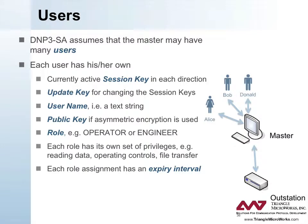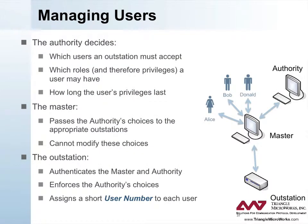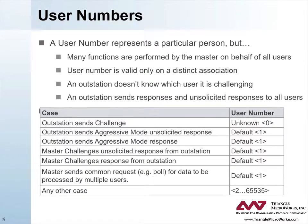DNP3 secure authentication assumes that the master may have many users. Each user has their own currently active session key in each direction. In addition, each user has an update key for changing the session keys, a username which is a text string, a public key if asymmetric encryption is used, and a role — for example, an operator or an engineer. Each role has its own set of privileges, such as reading data, operating controls, or executing file transfers. Each role assignment has an expiry interval as well. The authority decides which users an outstation must accept, which roles and privileges a user may have, and how long the user's privileges last. The master passes the authority's choices to the appropriate outstations and cannot modify these choices. The outstation authenticates the master and the authority, enforces the authority's choices, and assigns a short user number to each user. A user number represents a particular person; however, many functions are performed by the master on behalf of all users. Note that a user number is valid only on one distinct association — that is, the same user can be assigned different user numbers on different links.